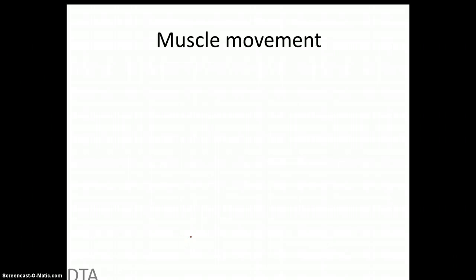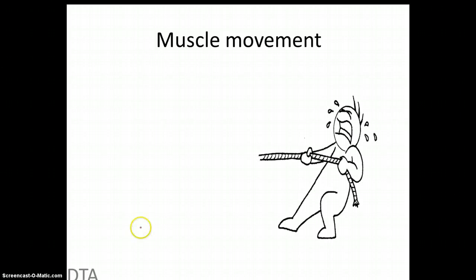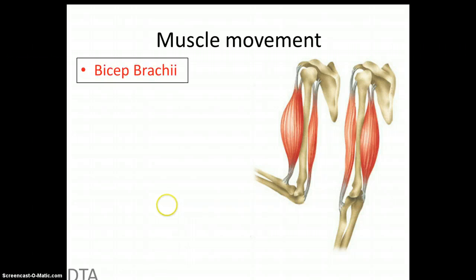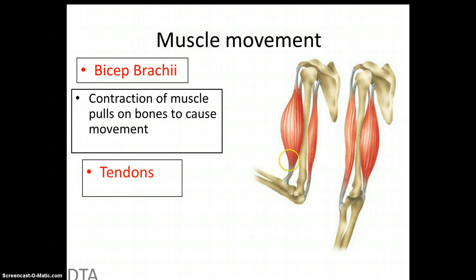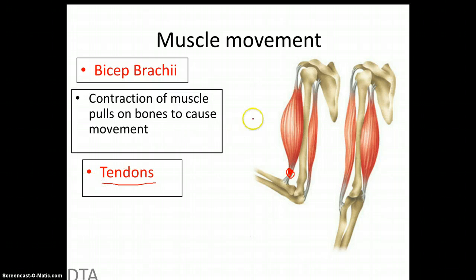The first thing we'll look at in this screencast is how muscles move. What you should know is that muscles can only pull — there are no muscles that can push. Here we've got our bicep, more properly called the bicep brachii, which is the name we'll use from now on. A muscle contracts and pulls on the bone, therefore causing movement. The tendons are the things that attach our muscles to bones — always remember that.